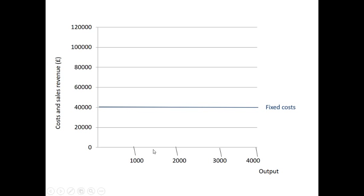So that is what the fixed costs line looks like. It doesn't matter if I'm making 1,000 units, 4,000 units, or 1,000,000 units. If my fixed costs do not change regardless of output, they're always going to be the same, which is in this case £40,000. But regardless, in any break-even chart, the fixed costs line will be a straight horizontal line.